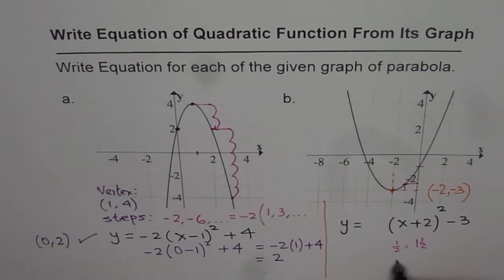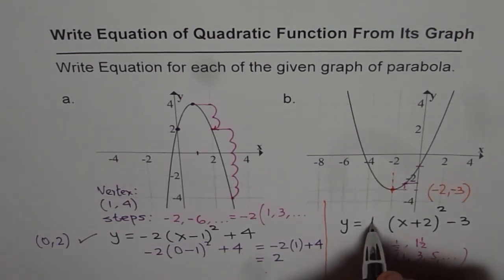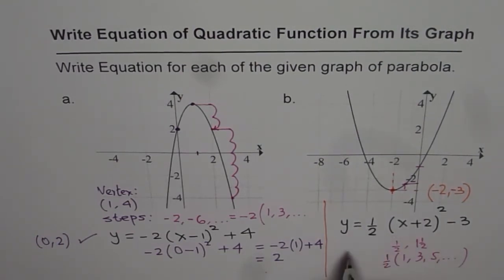That means we are going up in the steps which are half of 1, 3, 5, 7. And therefore, the value of a should be how much? Half. So it should be half. So we get y equals to half (x plus 2) whole square minus 3.